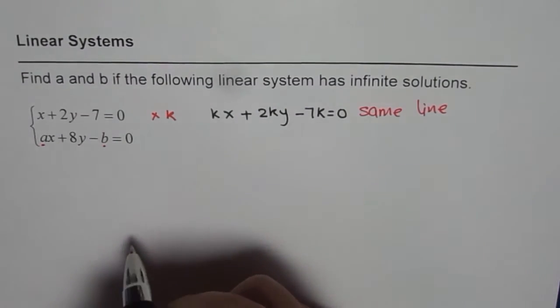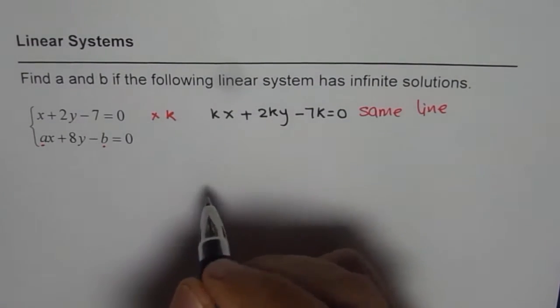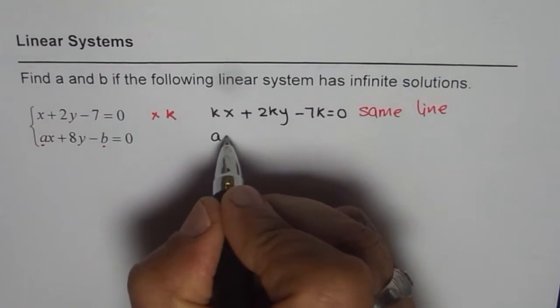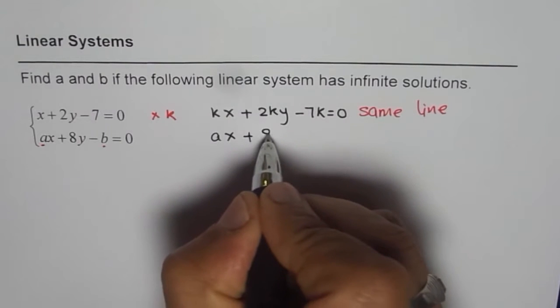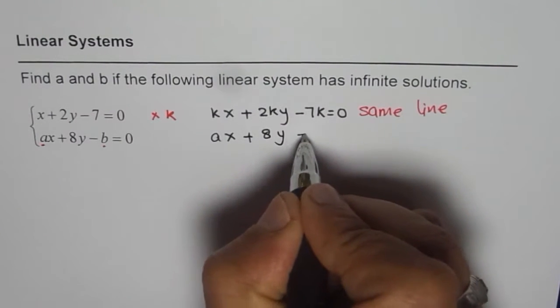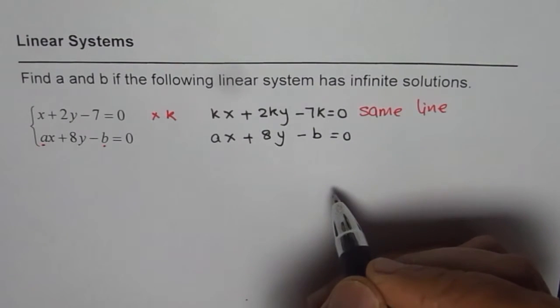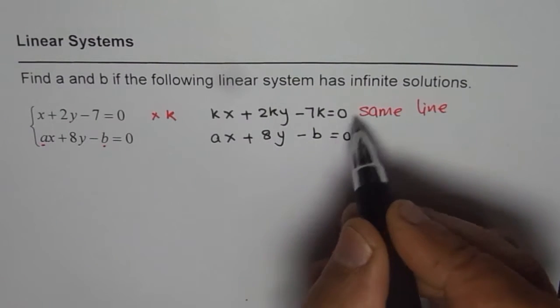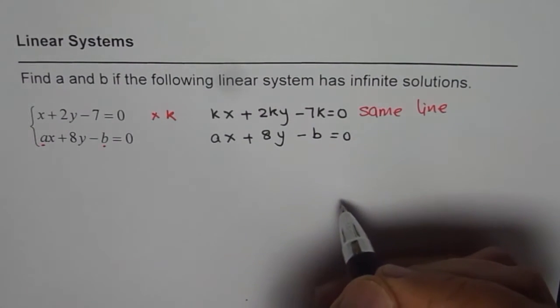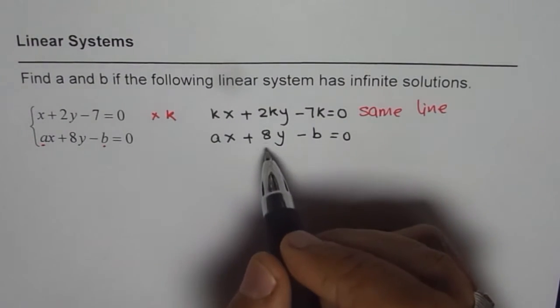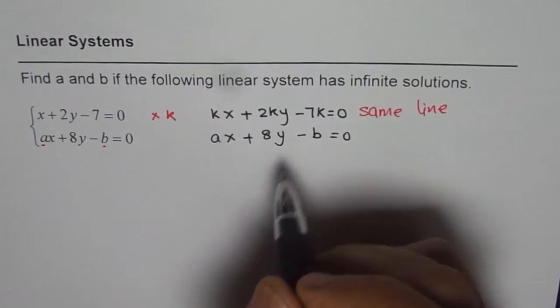Now we can compare these two equations. The second equation is ax + 8y - b = 0. If these two equations represent the same line, infinite solutions means same line, so they should have exactly the same coefficients.